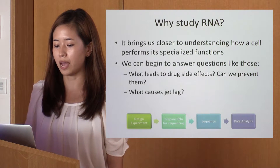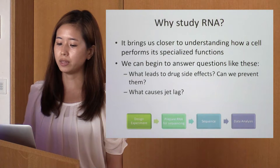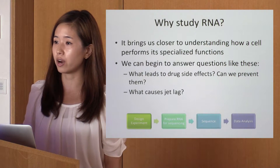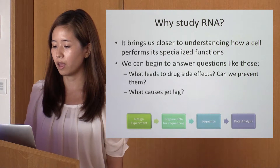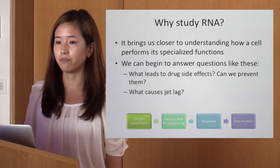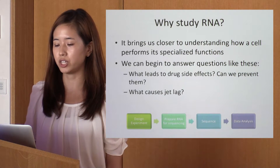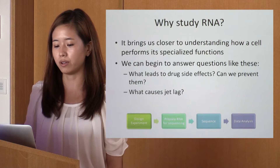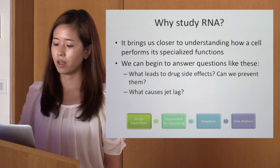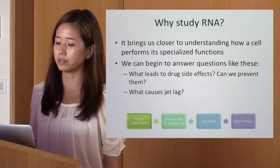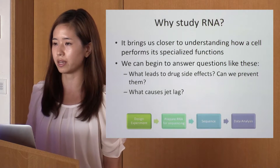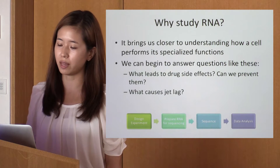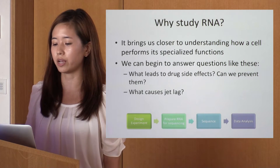With that, we can begin to answer questions like these. What leads to drug side effects and can we prevent them? Many pharmaceuticals are designed to target one or a small number of genes or proteins. Using RNA-Seq, we can study the expression of all genes affected by a drug treatment, and with this information we can predict which off-target genes lead to side effects. We might also ask: what causes jet lag? Scientists can use RNA to track the internal circadian clock of humans and model organisms like mice. By extracting RNA from humans and mice before and after they have experienced jet lag, we can see how jet lag affects the normal functioning of the circadian clock.